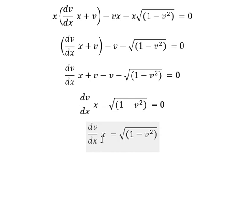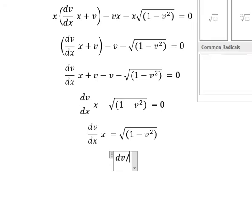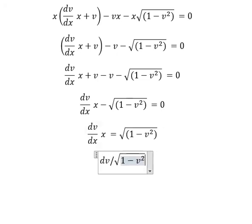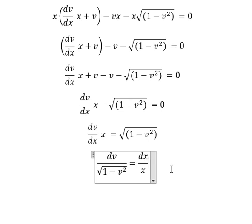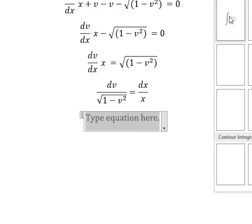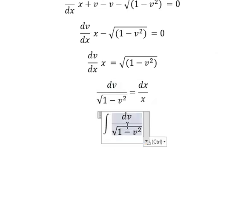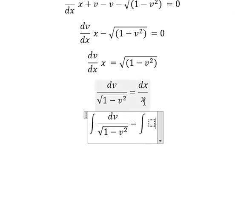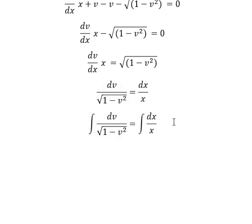We rearrange the terms, putting them on the appropriate sides. Next, we integrate both sides. The integral gives us arcsin of v equals ln of the absolute value of x plus C.